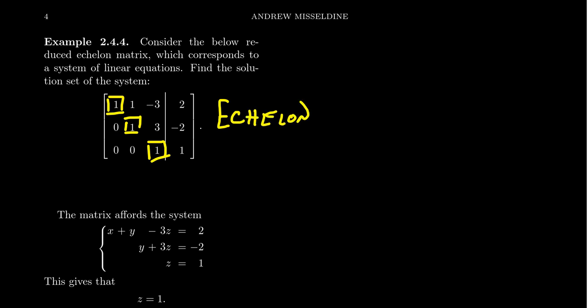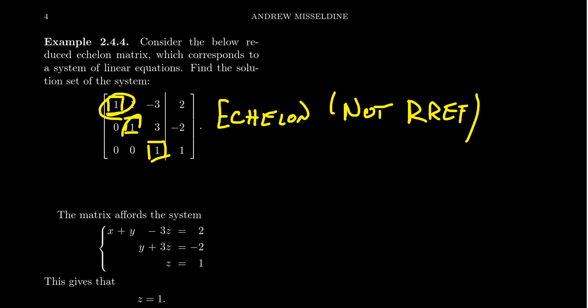Now, it's not in row-reduced echelon form. Remember, to be in row-reduced echelon form, you have to be in echelon form, but you also have to satisfy two other conditions: the pivots have to be 1, which they are, but the numbers above the pivots also have to be zero, which they aren't in this situation. That's okay, though, because if an augmented matrix is in echelon form, it turns out we can very easily solve the associated system of linear equations.